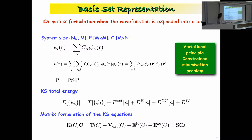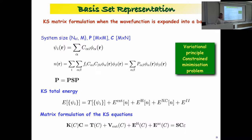We use a formalism based on matrix representation where we solve equations with the Kohn-Sham matrix K, the orbital coefficients, and different terms: kinetic energy, external potential, Hartree, exchange-correlation, where S is the overlap matrix and epsilon are the orbital energies. This is the generalized Kohn-Sham equation — we have to solve this eigenvalue problem.